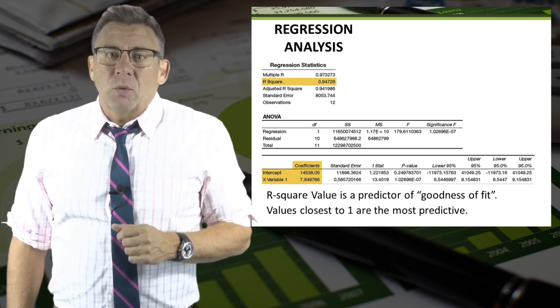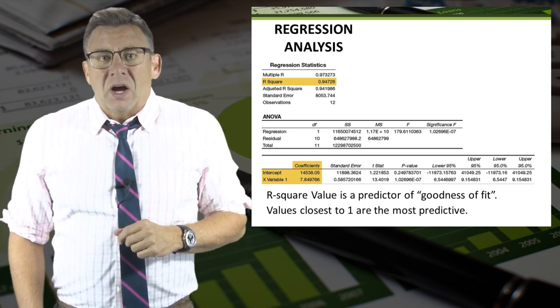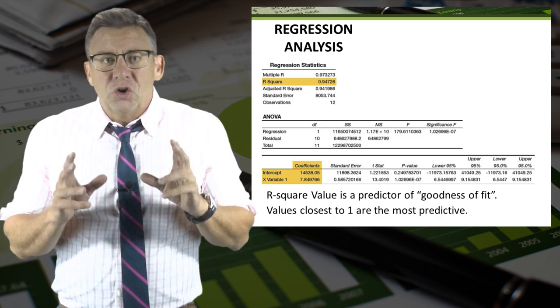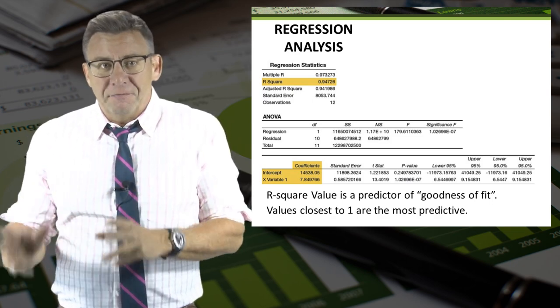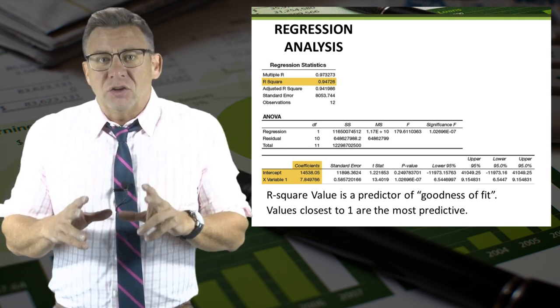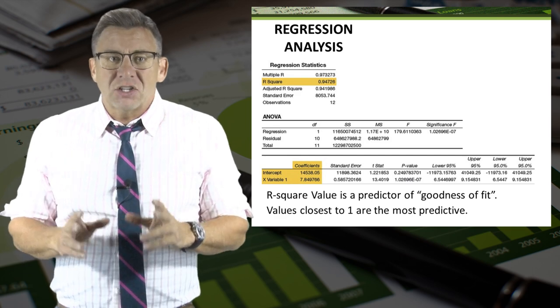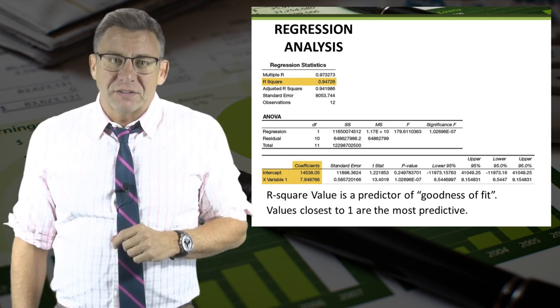The final number we need in regression analysis is the r-squared value, which is a predictor of the goodness of fit or how well the line fits the data points. R-squared values closest to 1 means the cost equation is good at predicting costs at various levels of volume.